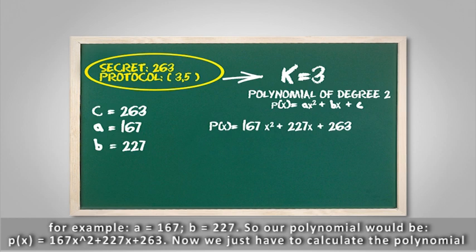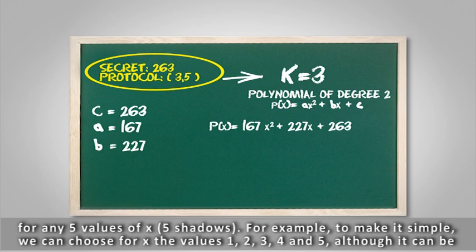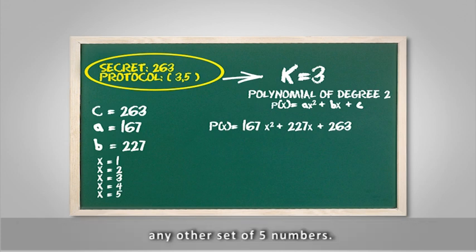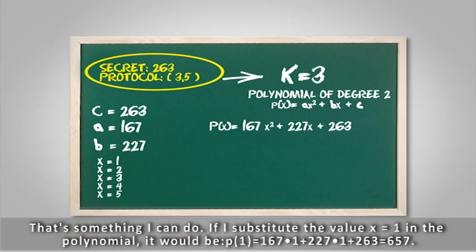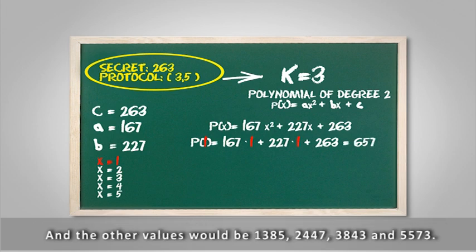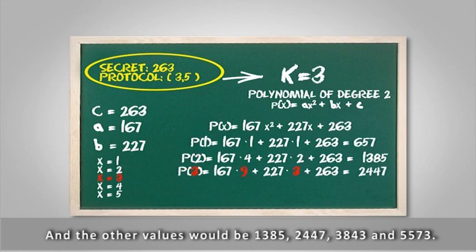Now we just have to calculate the polynomial for any 5 values of x to get 5 shadows. For example, to make it simple, we can choose for x the values 1, 2, 3, 4 and 5, although it can be any other set of 5 numbers. If I substitute the value x equal 1 in the polynomial, it would be p(1) = 167*1 + 227*1 + 263 = 657, and the other values would be 1385, 2447, 3843 and 5573.